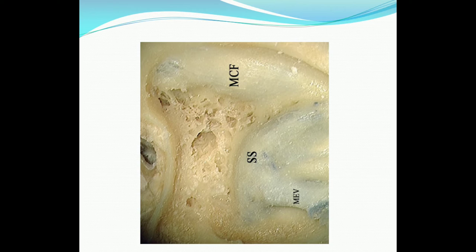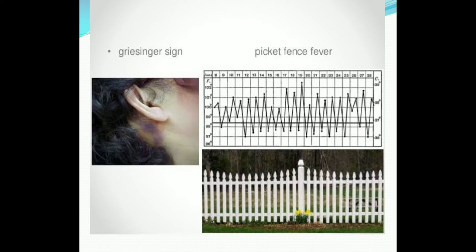Clinical features include symptoms and signs. The classical feature of lateral sinus thrombophlebitis is the picket fence type of fever. The graphical representation of the fever resembles a picket fence — fever is irregular with many spikes, and the spikes may coincide with the release of septic emboli into the bloodstream. In between the spikes, the patient may be asymptomatic.